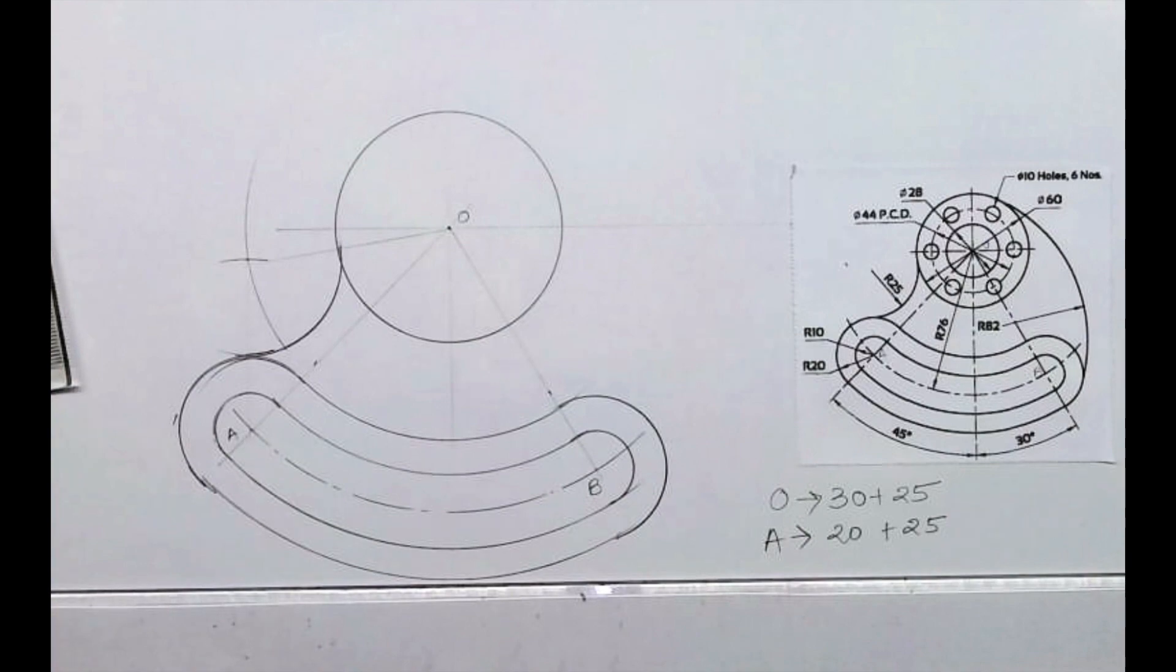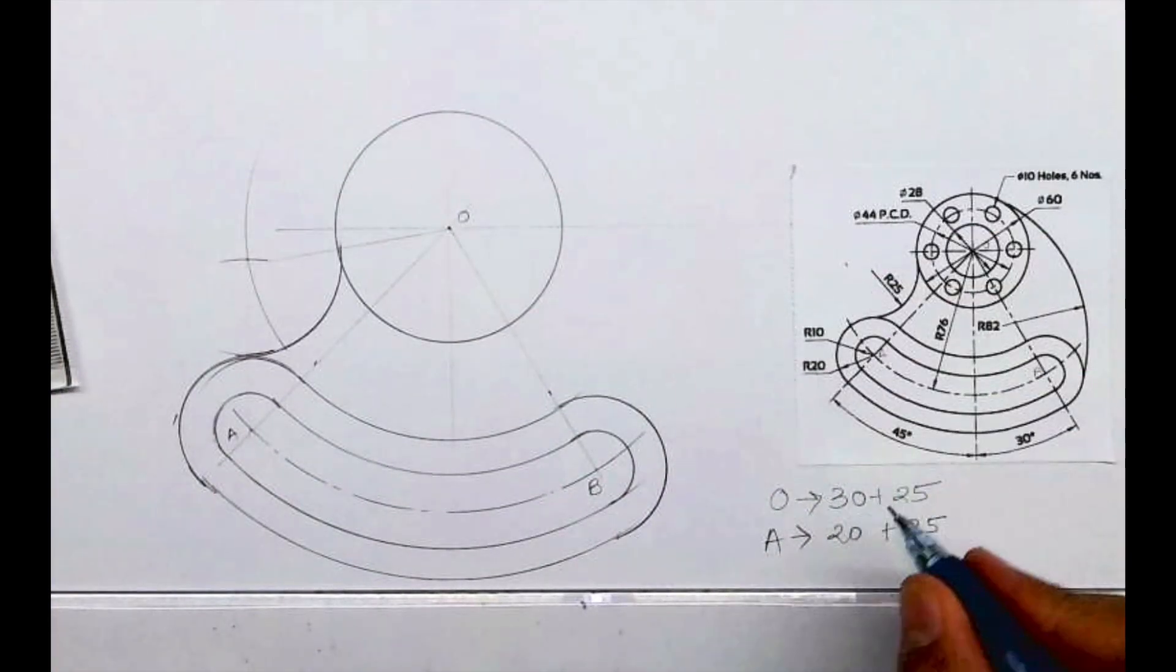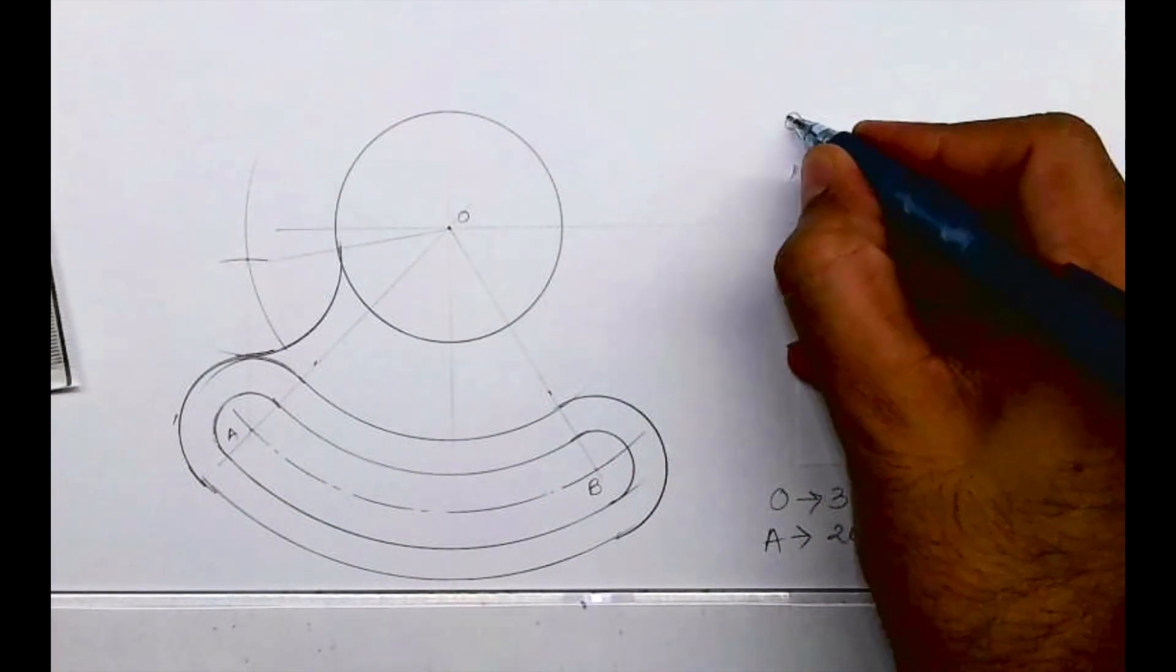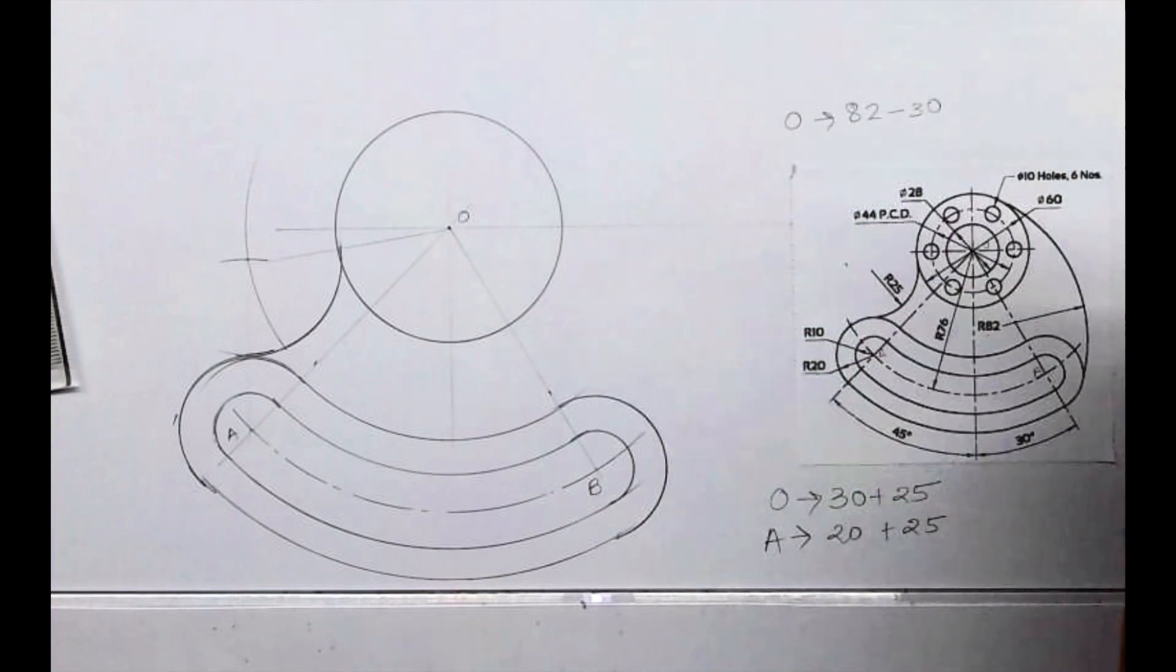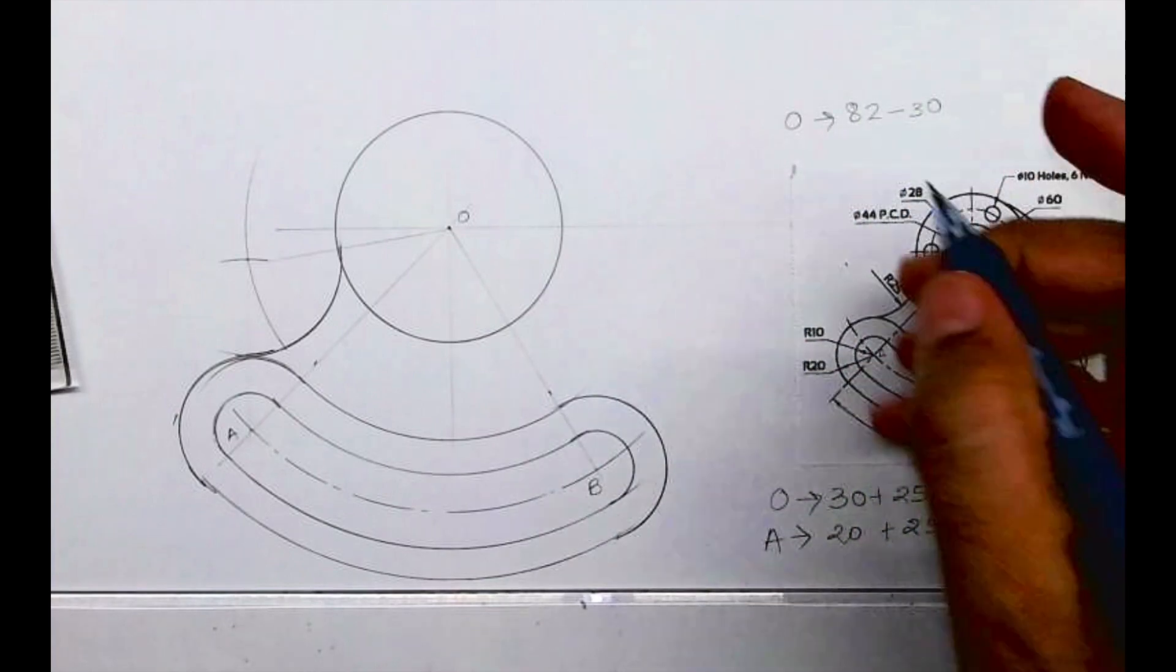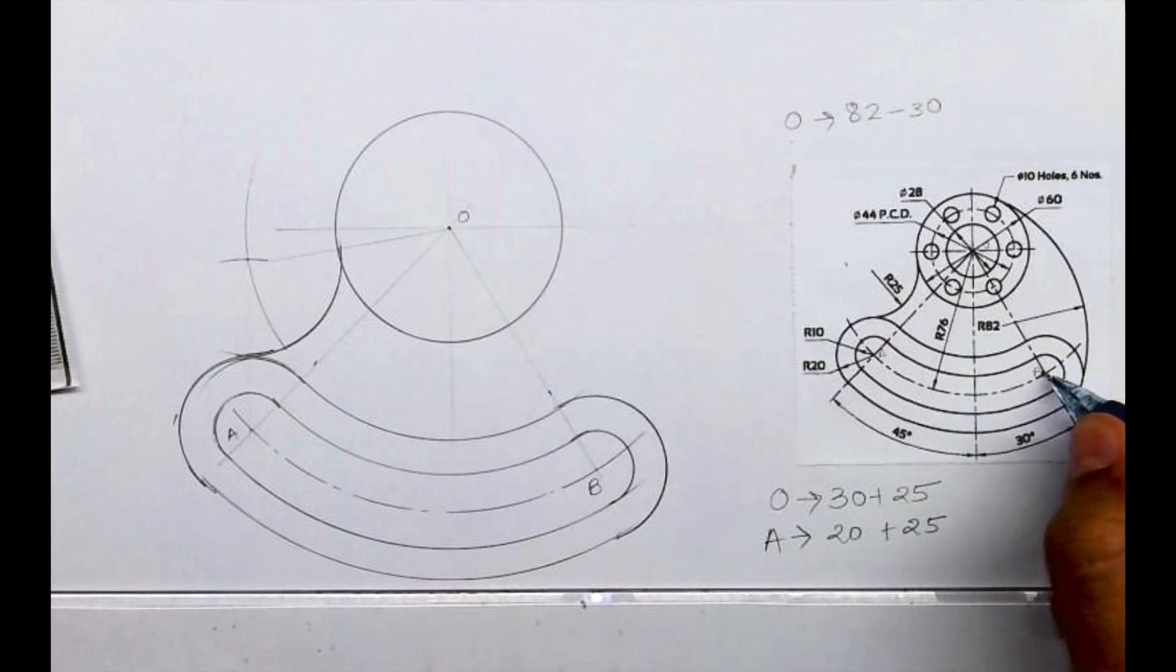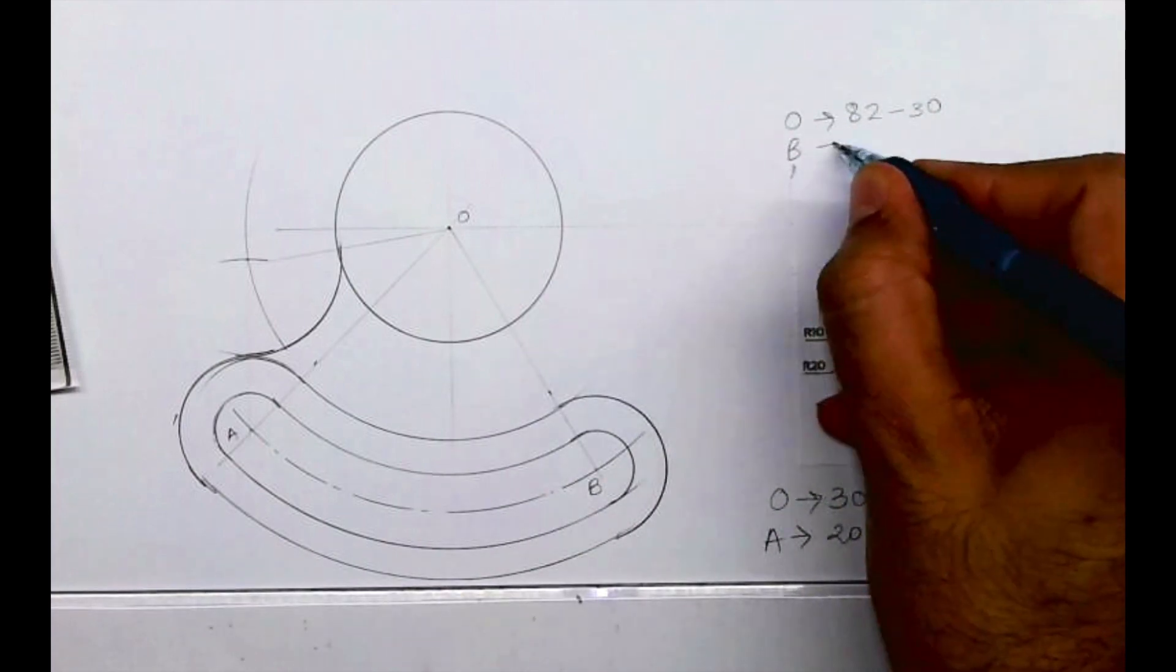Now to draw radius 82, which is internal R, from O we will cut 82 minus 30 because this radius is 30, and from B we will cut 82 minus 20.